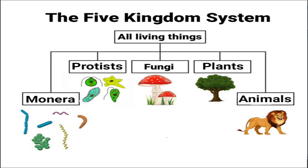The five kingdom system classifies all living organisms into five groups called kingdoms: Monera, Protists, Fungi, Plants, and Animals.